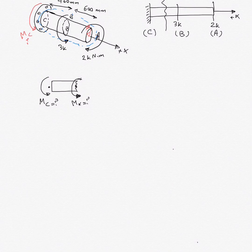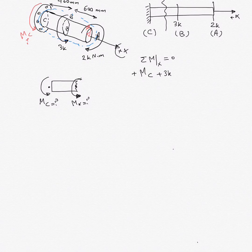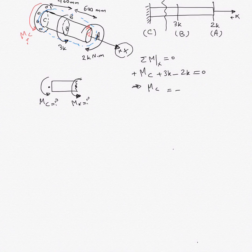Writing the summation of moment about the x-axis equal to zero for the entire system gives: M_C positive, plus 3k positive, minus 2k equals zero. Solving, M_C equals negative 1 kN·m. Since the sign is negative, the wall reaction actually acts in the opposite direction to what we assumed. We flip the arrow and note M_C = -1 kN·m.